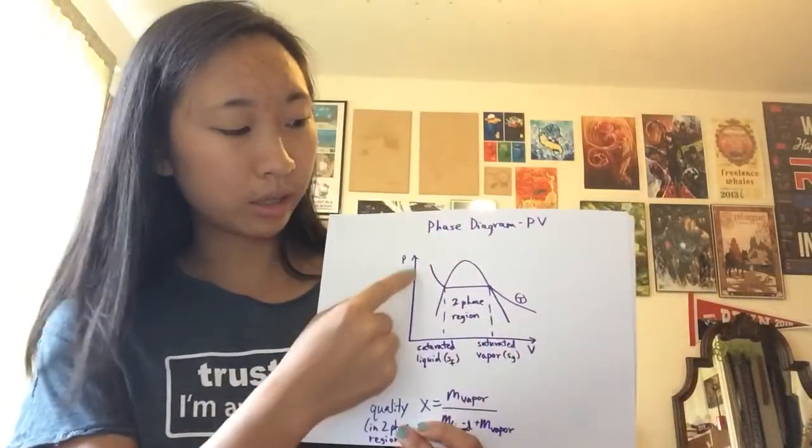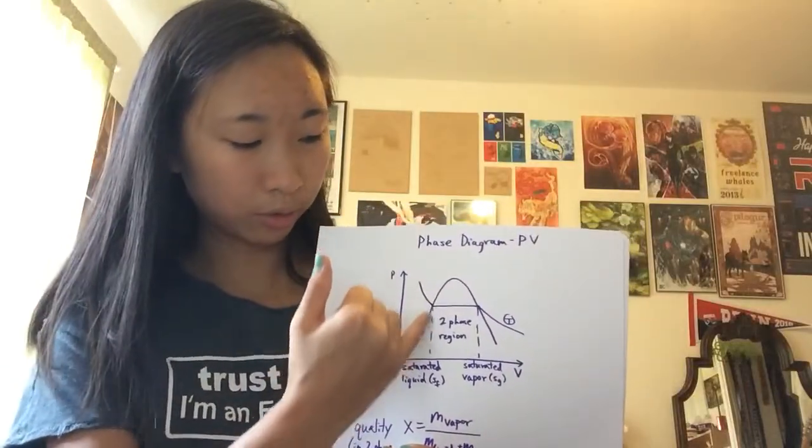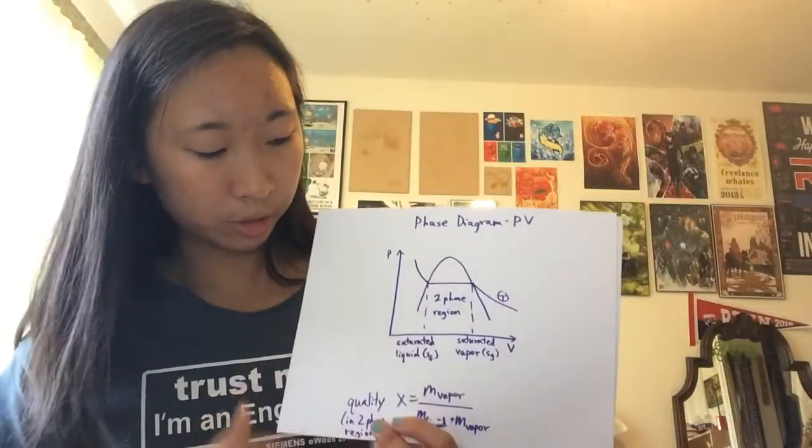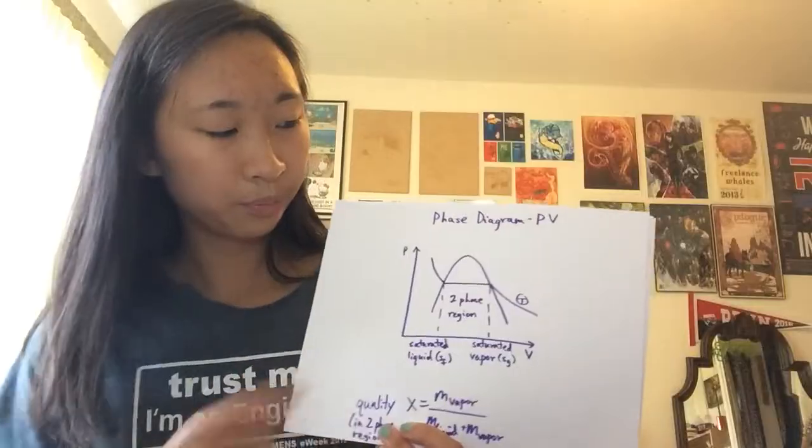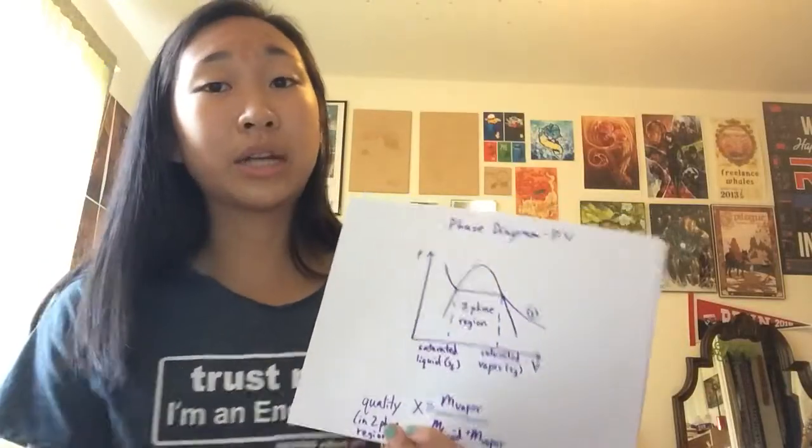For example, on this one, if you see where the isotherm intersects it, if you're at this point on the isotherm, along this left half of the vapor dome, anywhere on that point, you're a saturated liquid, which can be denoted as SF. And once you get to the right, you're a saturated vapor, or SG.